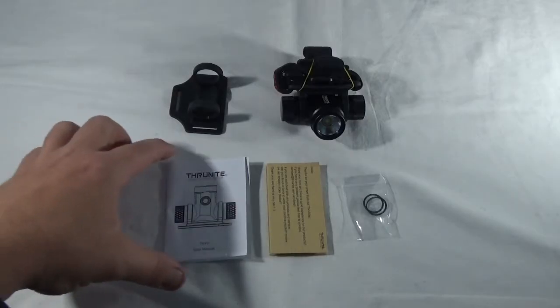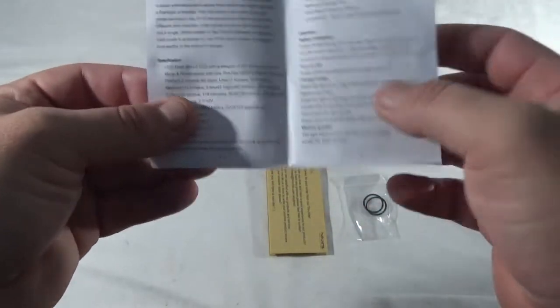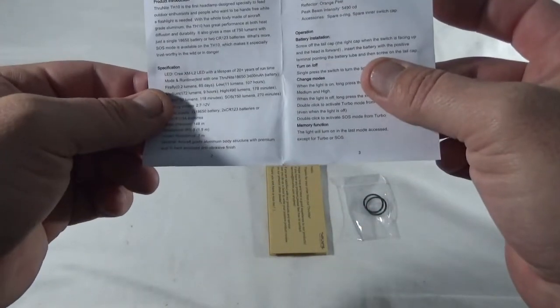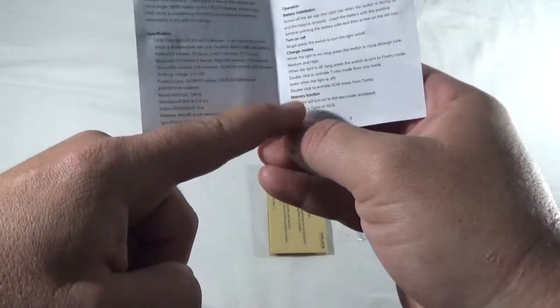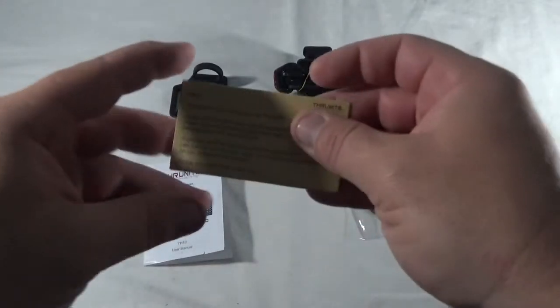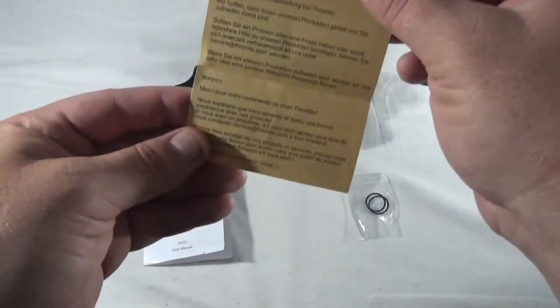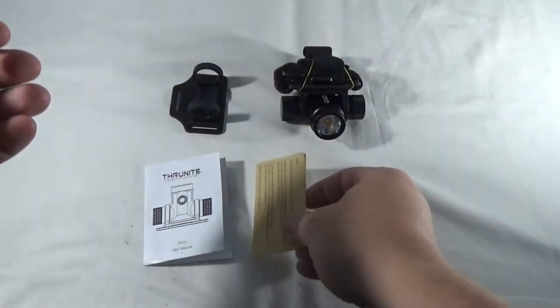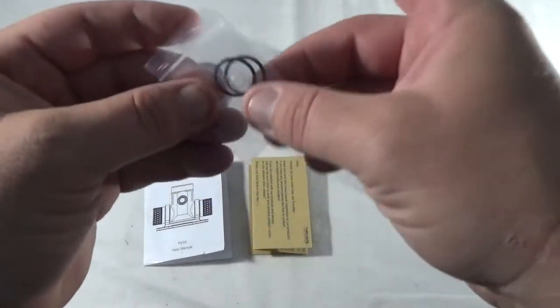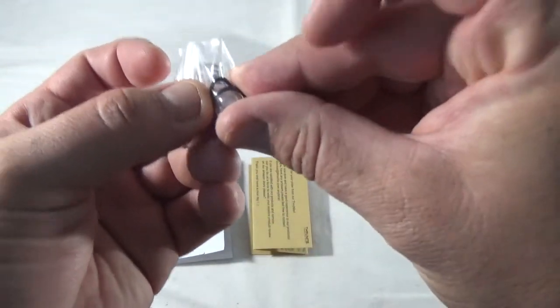In the box we get the user guide which is just kind of a two-page thing. It says what it's about, some stats on it, and how to use some of the buttons. We get a little thank you for buying card with please do a review on Amazon for us. We get a couple of rings and a little piece of plastic. I don't know what those are for yet.